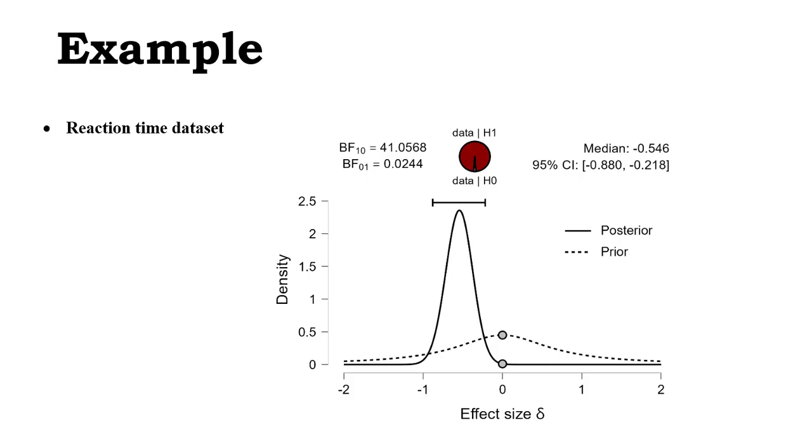And the Bayes factor shows that, because it says that the marginal likelihood of the model of the alternative hypothesis is 41 times higher than the marginal likelihood of the model of the null hypothesis. We can see that in the BF 1.0, the Bayes factor 1.0.